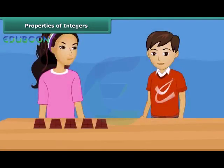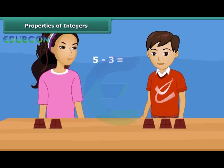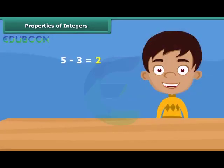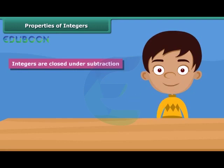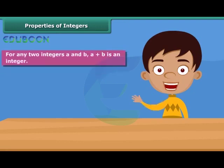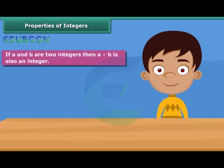Look at Rina. She has five chocolates. If she gives three chocolates to her brother, then how many chocolates are left with Rina? Yes, she is left with two chocolates. In this example, we see that the difference of two integers is also an integer. Hence, integers are closed under subtraction. In general, for any two integers A and B, A plus B is an integer, and A minus B is also an integer.